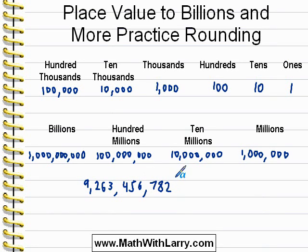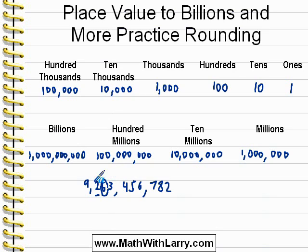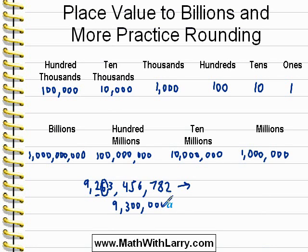Let's say you were asked to round this number to the nearest hundred million. Recall what we've done in previous lessons: first, we locate the place that we're rounding to. That's in the hundred millions place, according to our chart. Then we look at the digit to the right of it. If it's five or higher, we round up. If it's four or lower, we leave the digit to the left of it just the way it is. In this case it's five or higher, so we'll round up. Our new number will become nine billion, 300 million, and we just have zeros the rest of the way. So the number would simply be read as nine billion, 300 million.